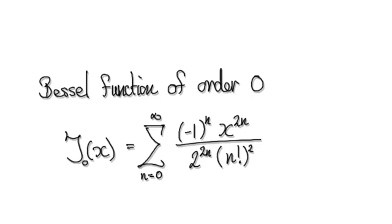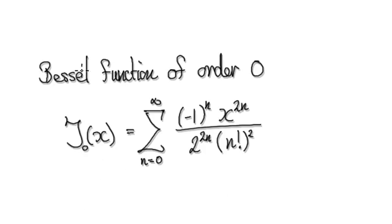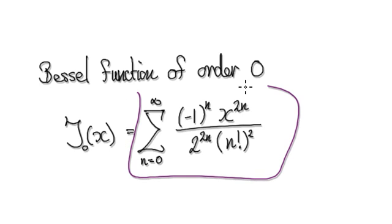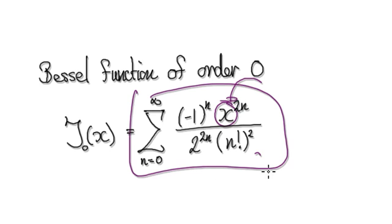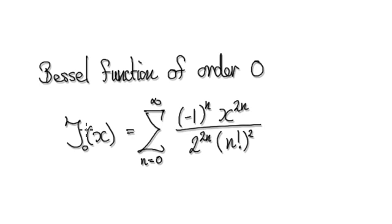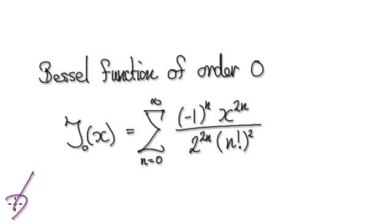Let's give you guys some more practice. This is the famous Bessel function of order 0. It's given by this formula. Find out for which values of x the series would converge — or another way of asking the same question: find the domain for this function. Press pause and have a go.